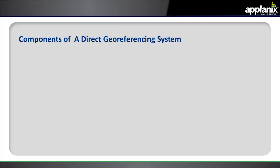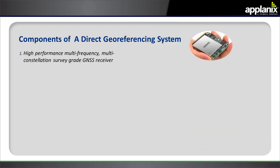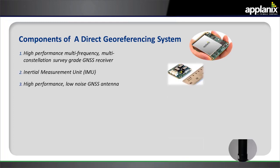So what are the components of a direct georeferencing system? Well, first you need a high-performance multi-frequency, multi-constellation survey grade GNSS receiver. You need an inertial measurement unit for computing orientation, and you need a high-performance, low-noise GNSS antenna.